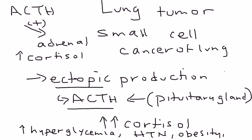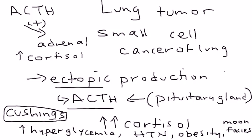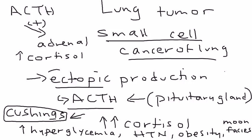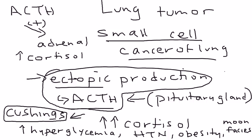Cortisol also causes obesity and other characteristic facial abnormalities such as moon facies. All of these combined result in a syndrome known as Cushing's. A typical exam question will have a patient with small cell lung cancer who has developed all these symptoms leading to Cushing's, and the answer is ectopic production of ACTH. This is a perfect example of paraneoplastic syndrome.